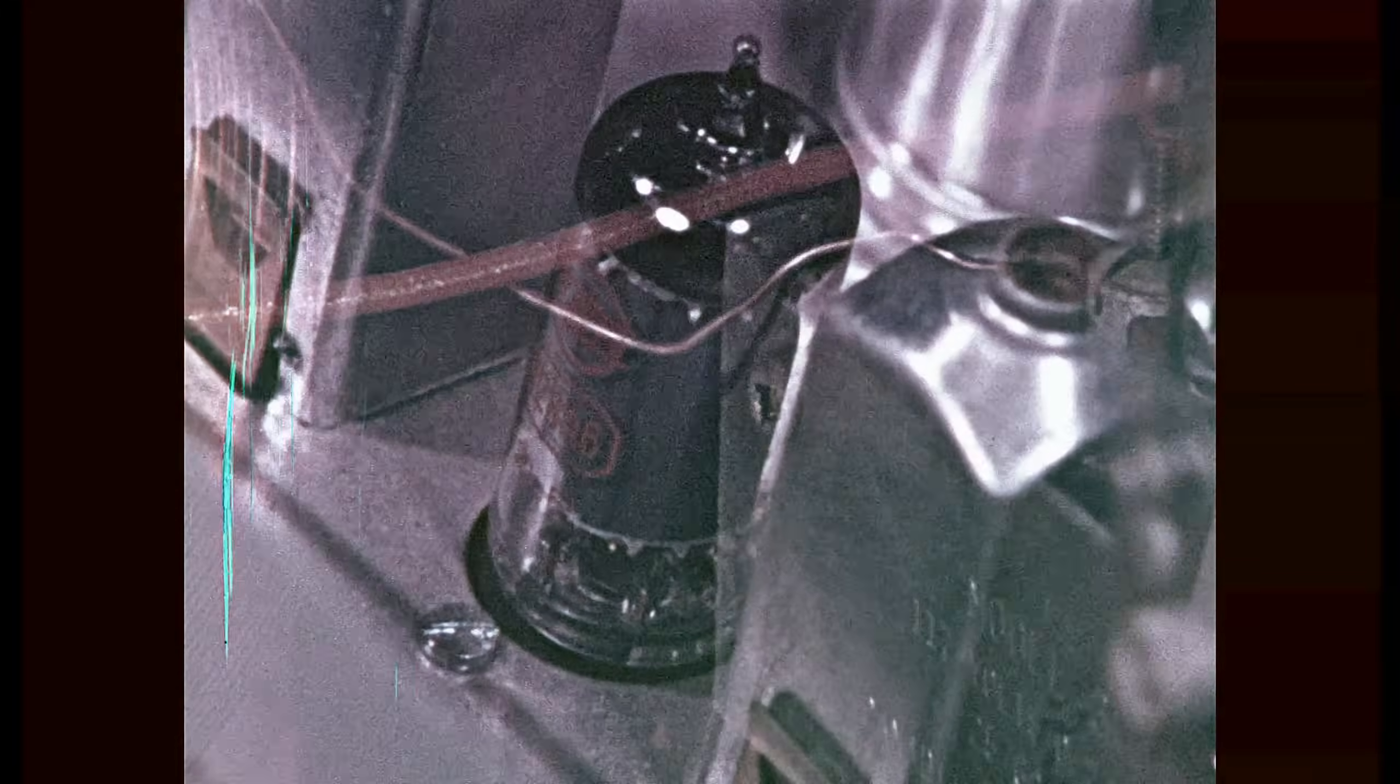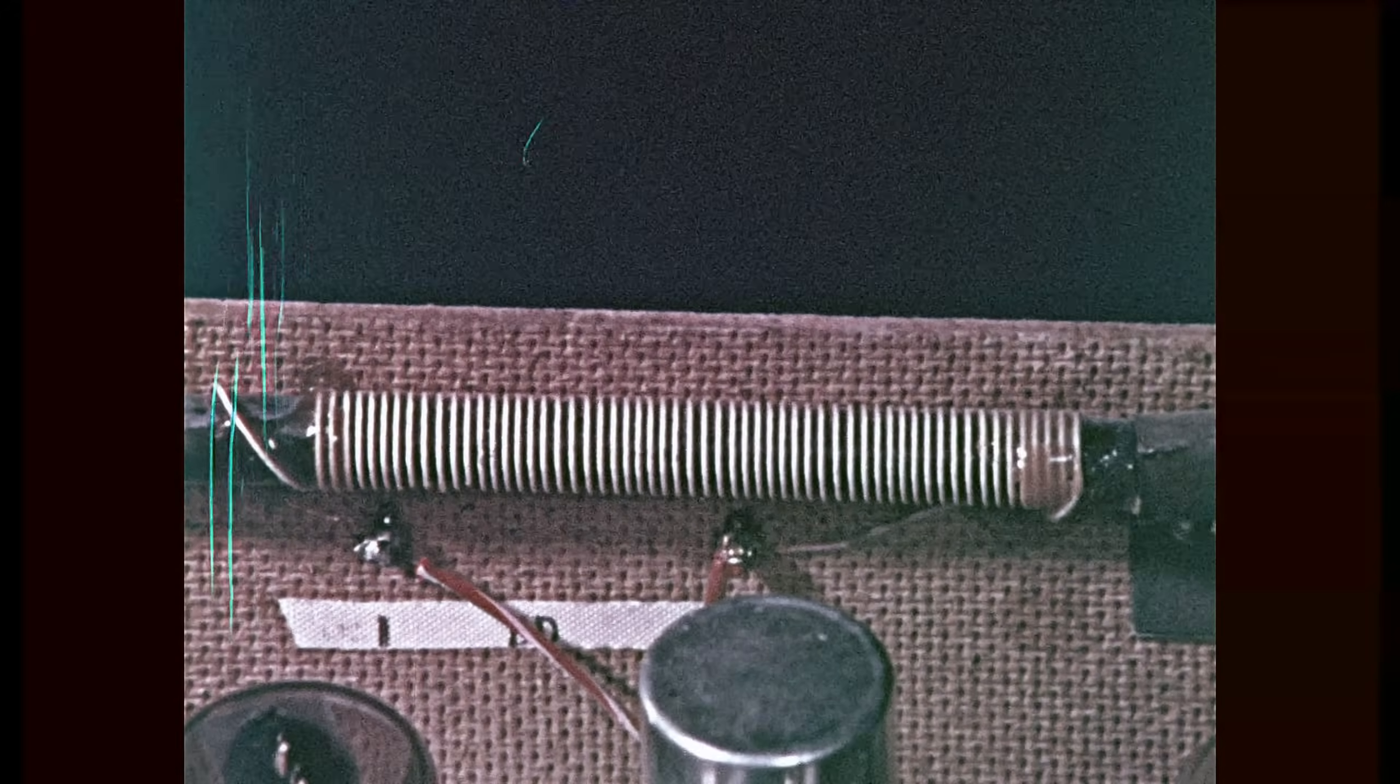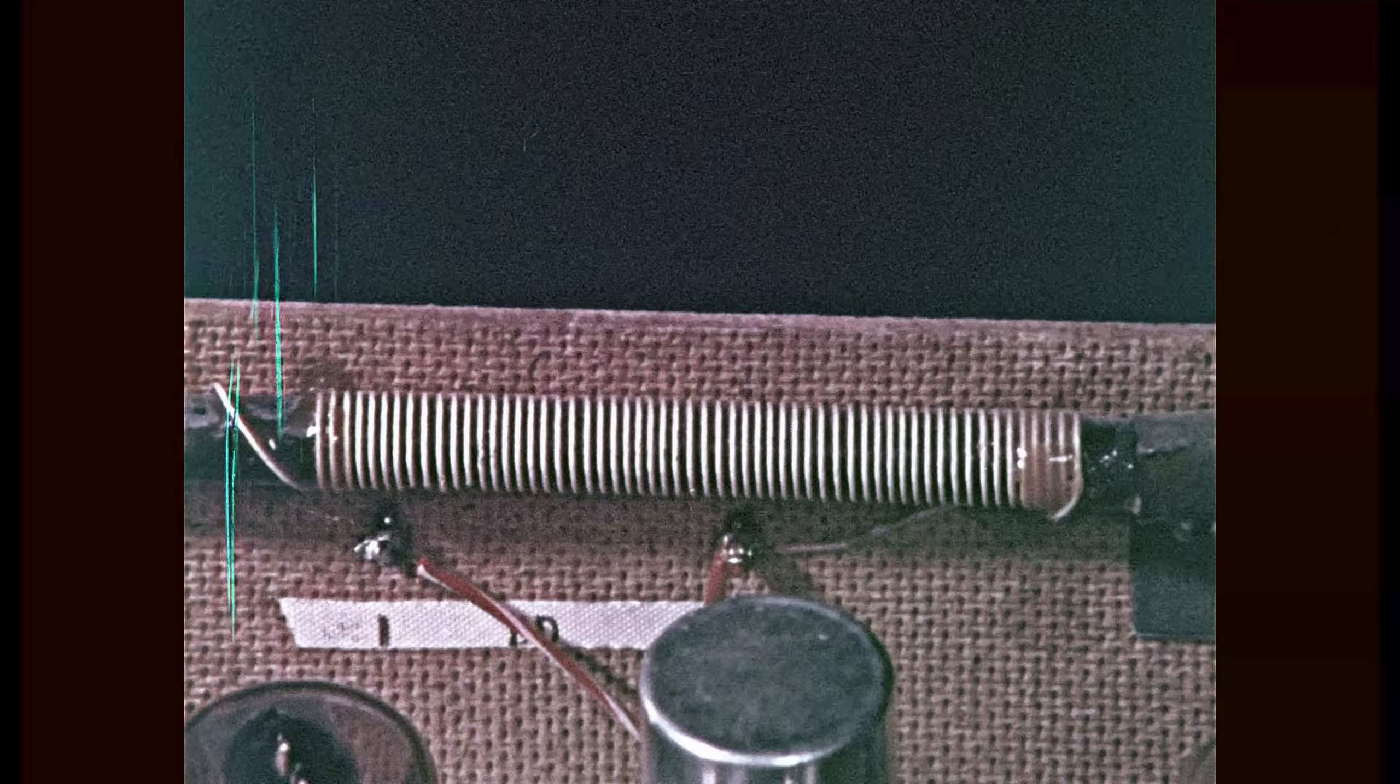But since it isn't practical to have a separate antenna in a receiver for each station, some AM receivers use built-in loop antennas. The loop is made of fine insulated copper wire.